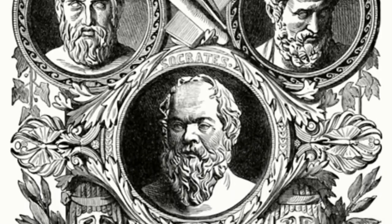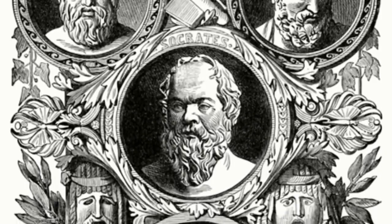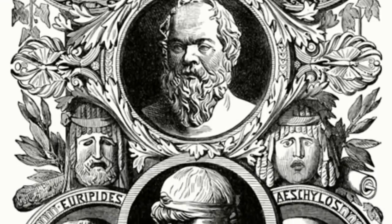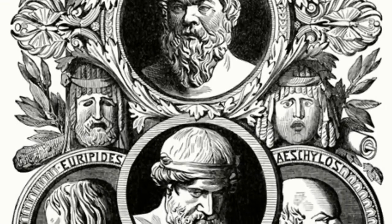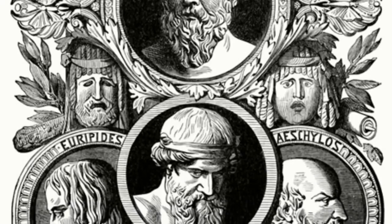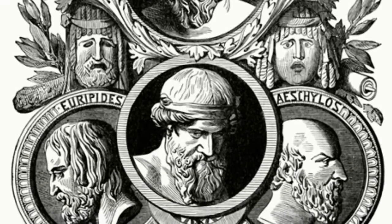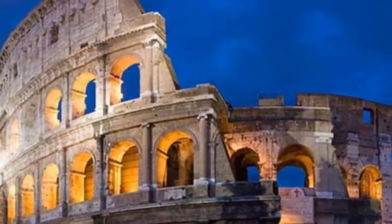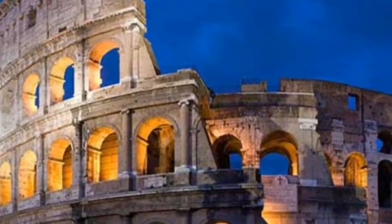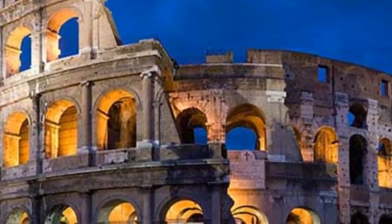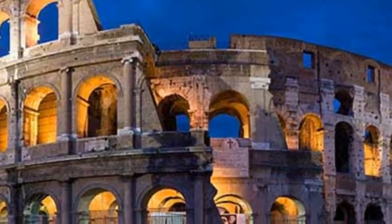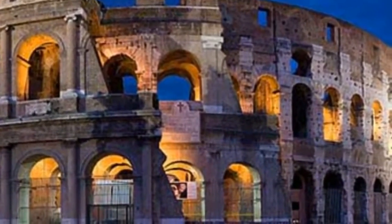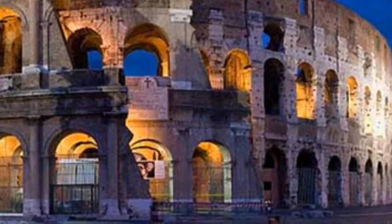Aristotle wrote that Arcadia in Greece, before being inhabited by the Hellens, had a population of Pelasgians, and that these aborigines occupied the land already before there was a moon in the sky above the Earth. Censurinus, a Roman grammarian and miscellaneous writer from the 3rd century AD, also refers to a time in the past when there was no moon in the sky.